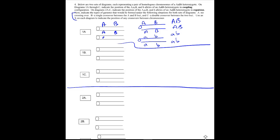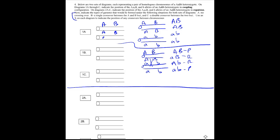In part B, we're also in the coupled configuration, and it says a single crossover between the A and B locus. So we'll get some parentals and some recombinants. We get these kinds of recombinants and these kinds of parentals - parental, parental, recombinant, recombinant.